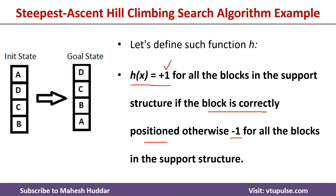In the goal state, b should be on top of a, so b is incorrectly placed — giving minus 1 for c. For d, the support structure is c and b; both are not correctly placed, so the heuristic value is minus 2. For a, all three blocks are not correctly placed, giving minus 3. The total heuristic value for the initial state is minus 6.